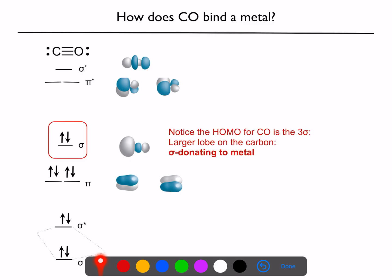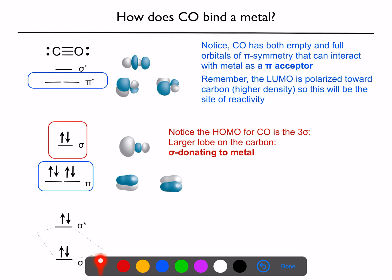And so here's our HOMO, sigma donating from the lobe localized on carbon. And then we can pi-accept into the pi-star into the lobe, again, localized on the carbon.